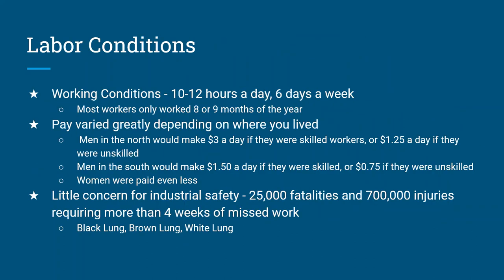What were labor conditions like at this time? It was different than today. Working conditions meant usually 10 to 12 hours a day, six days a week — you got Sundays off for church. On top of that, you usually only worked about nine months of the year, meaning all the money you made during those nine months you had to budget for twelve. Pay rates varied depending on whether you were in the north or south, and whether you were men or women. Men in the north would make about $3 a day if skilled, or $1.25 if unskilled.